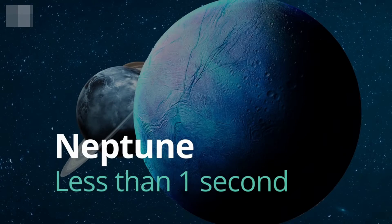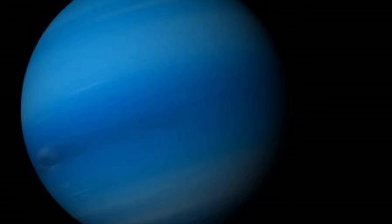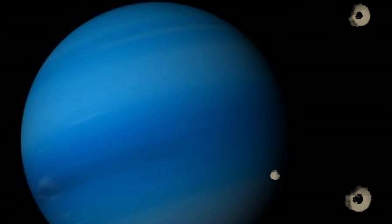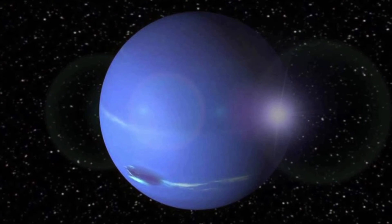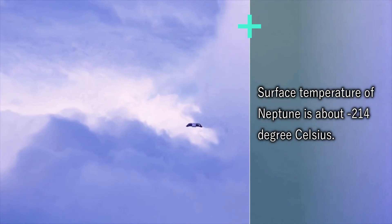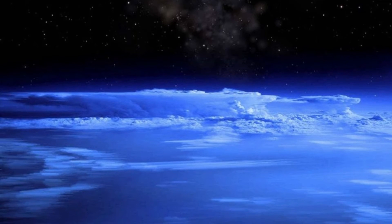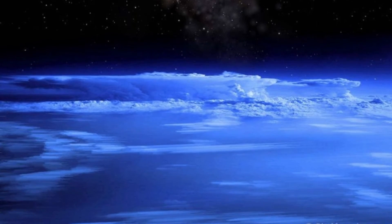Neptune: less than one second. Neptune is the farthest known planet from the Sun in the solar system. It is the fourth largest planet by diameter, the third most massive planet, and the densest giant planet with a surface temperature of about minus 214 degrees Celsius. You would survive for less than one second on Neptune without wearing a space suit.